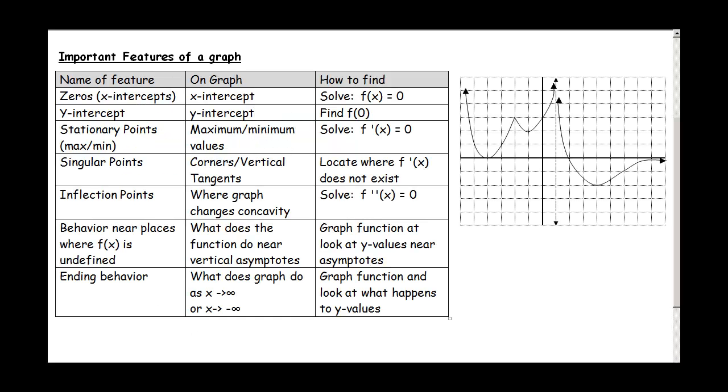Over here on the left we can see all of the different features of the graph that are important. So first let's look at the zeros. These are the places that are the x-intercepts. If we look at our graph we have a zero right here and we have another zero right here.